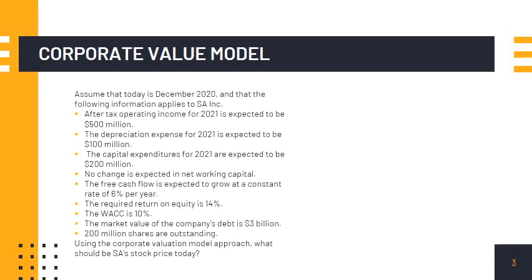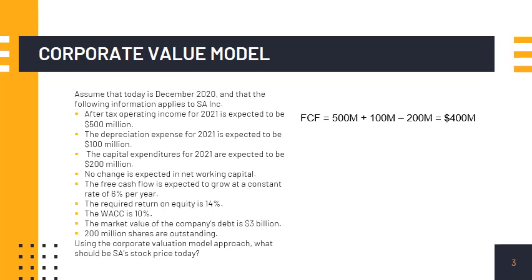Here is a sample problem. Say today is December 2020. The free cash flow in 2021 is computed as: net operating profit after tax of $500 million, add back depreciation of $100 million, deduct capital expenditures of $200 million, equals $400 million. The free cash flow is expected to grow at a constant rate of 6 percent.